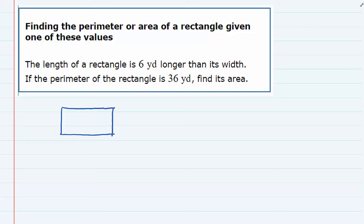For this question, we're told the length of a rectangle is six yards longer than its width, the perimeter of the rectangle is 36 yards, and we're asked to find its area.